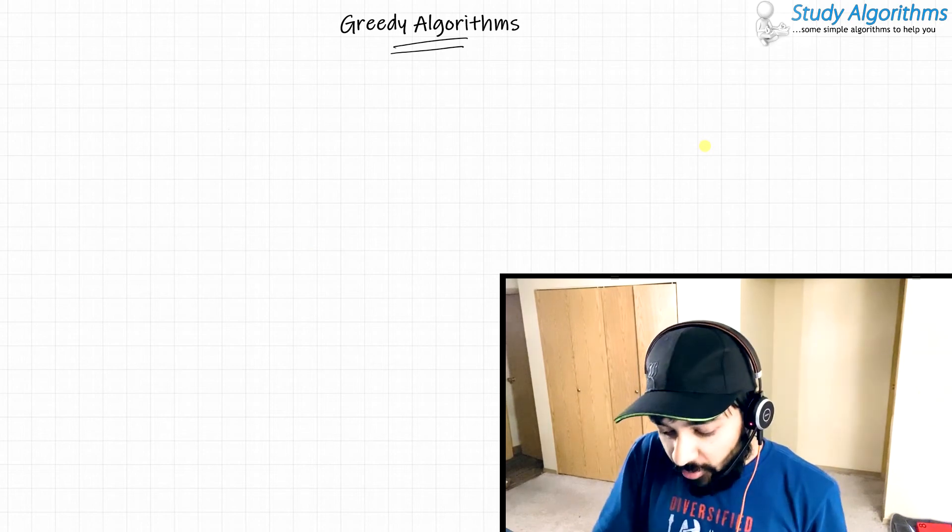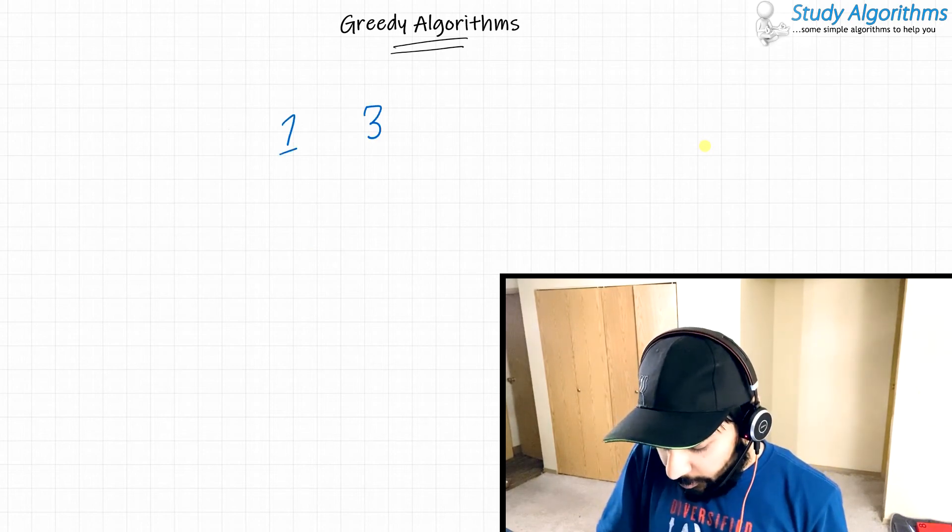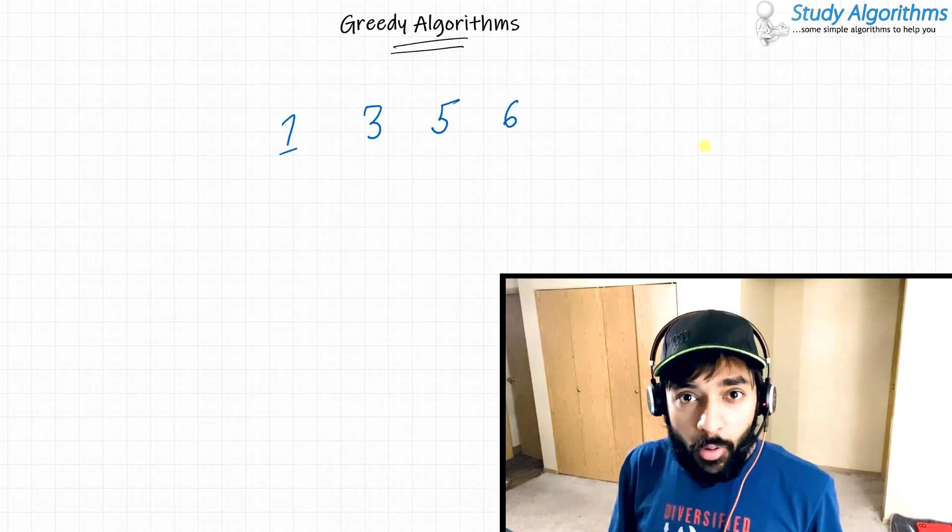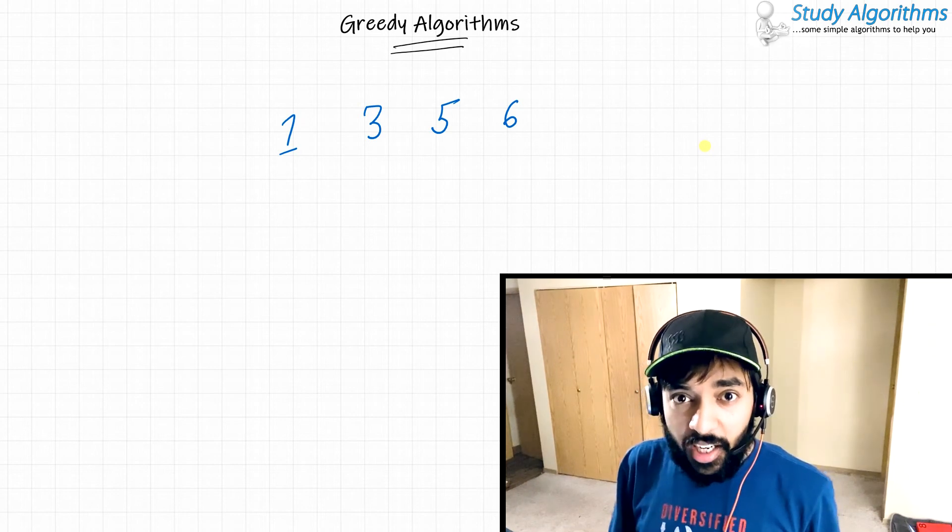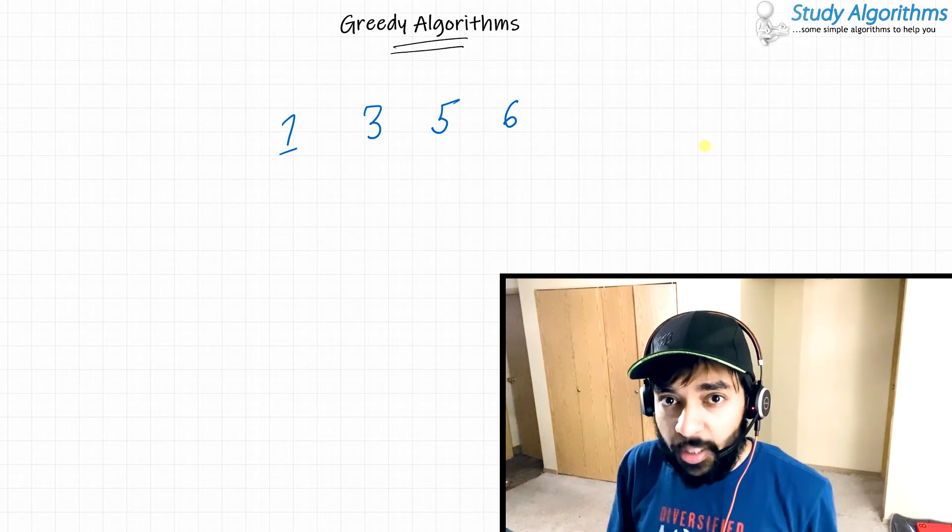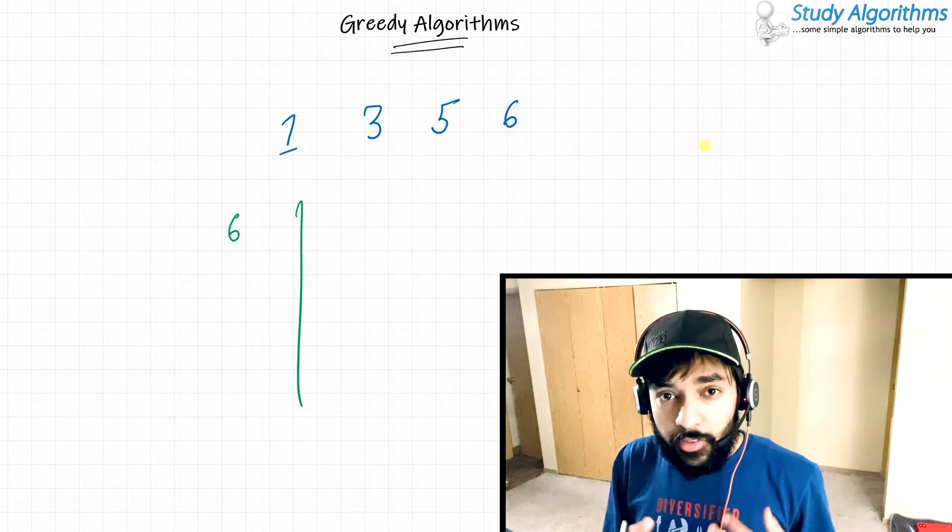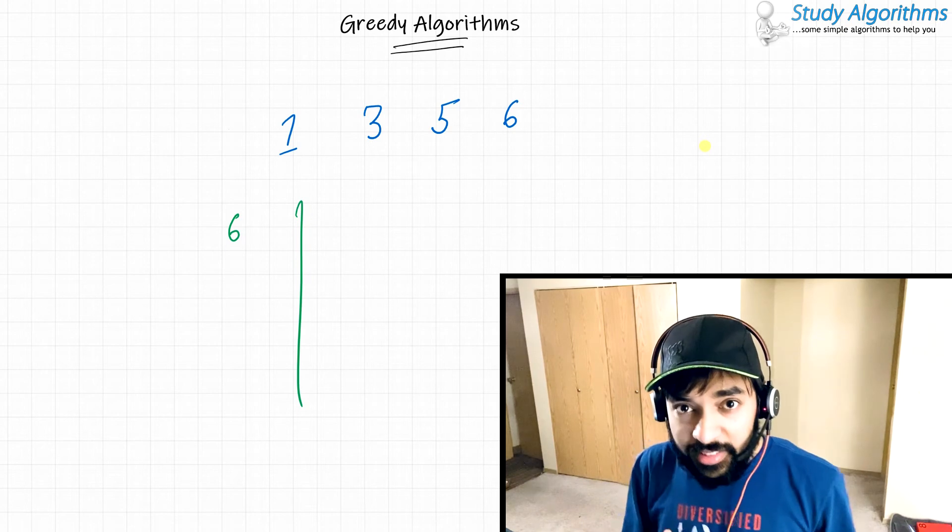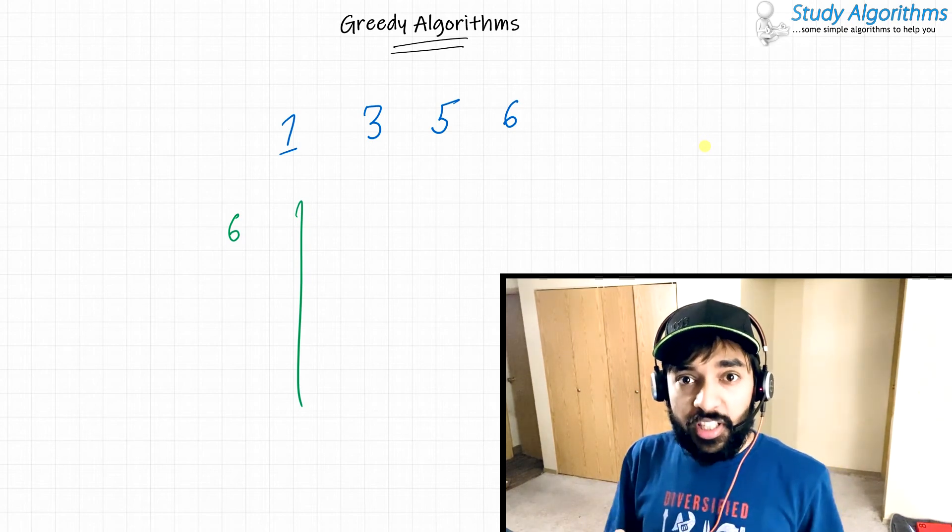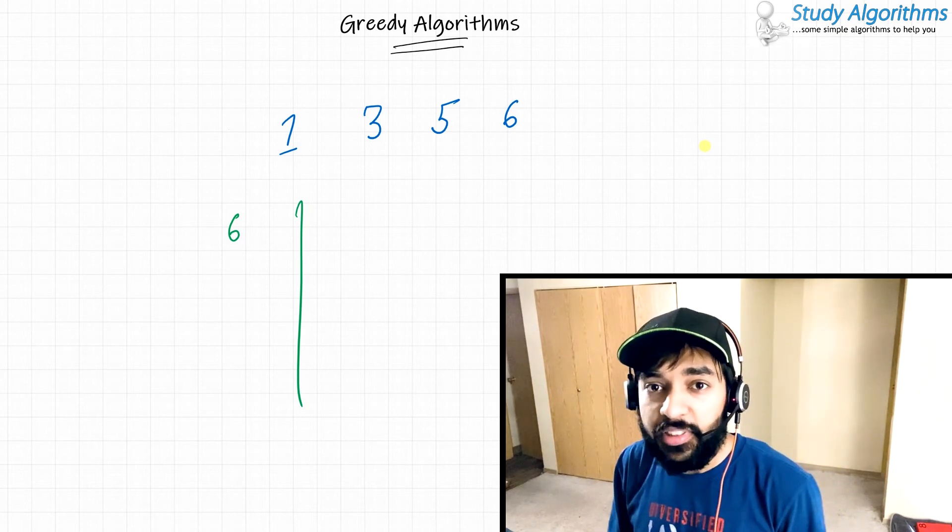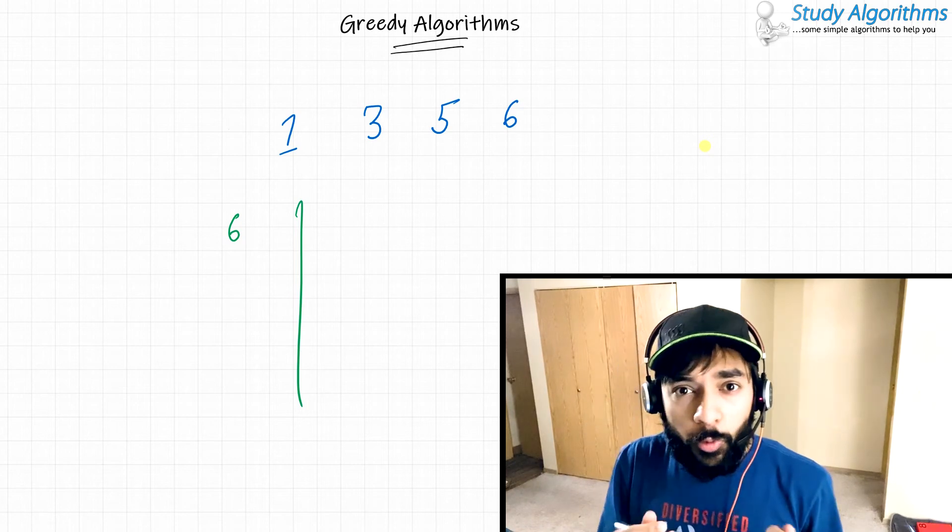Let us say you are given some of these numbers. Now I ask you what is the largest single digit number from this sample set? Your answer would be 6. Now I change the question. I ask you what is the largest two digit number that you can form using this sample set?